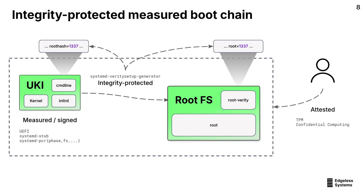Putting the root hash in the kernel command line means putting it into the UKI. And putting something in the UKI means putting it into a TPM PCR, because every UKI component will be measured. So if there's a change in the root hash, that results in a mismatch in the PCR — we can always notice if someone tampers with it. We effectively bind the identity of our root file system into the UKI and thus into our PCR measurements, which we can later attest.